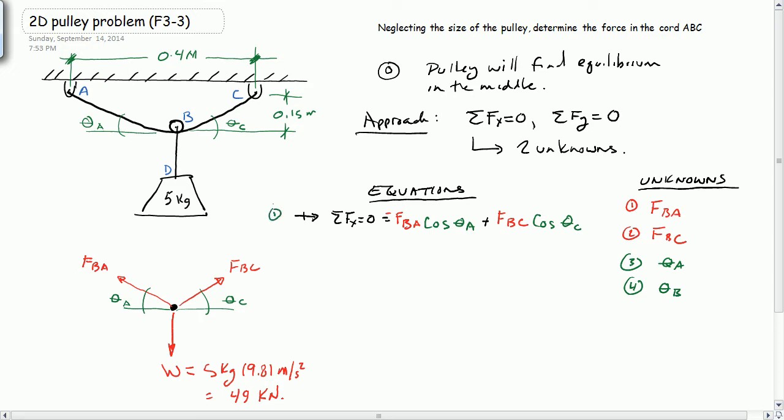So there's one equation. The second equation we get is going to be sum of the forces in the y-direction, up being positive. So we get FBA sine theta A plus FBC sine of theta C minus W, and that all equals 0. So there's our second equation.